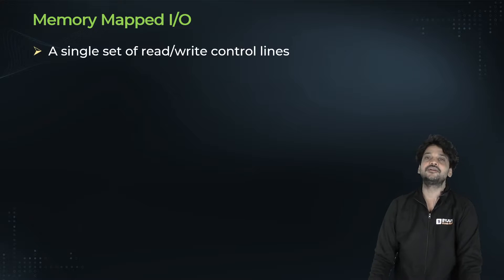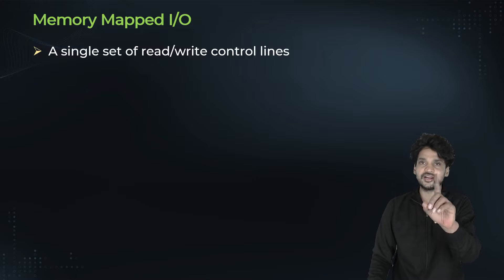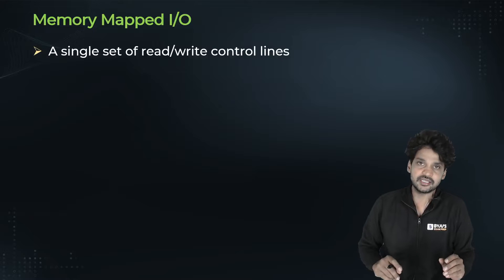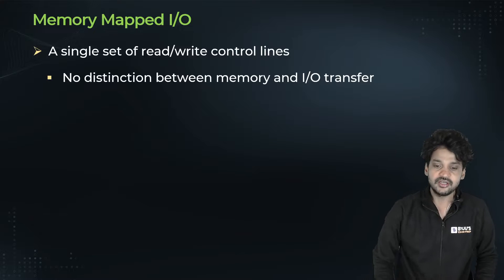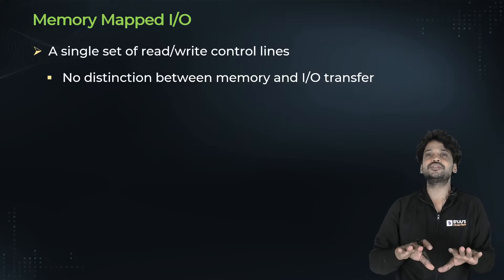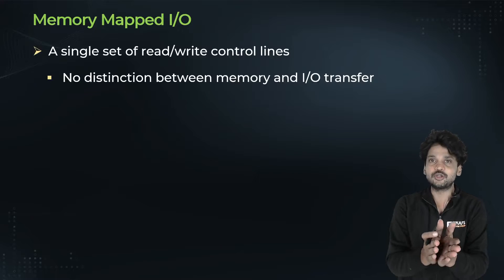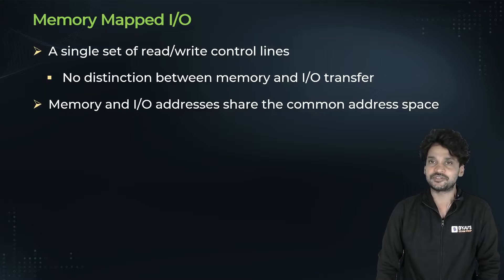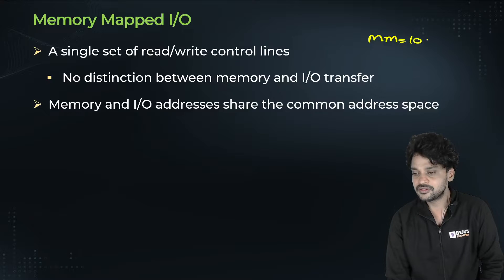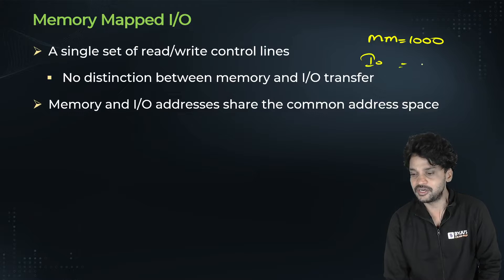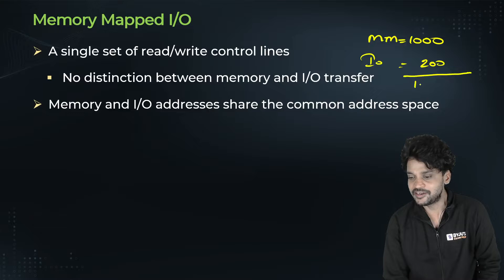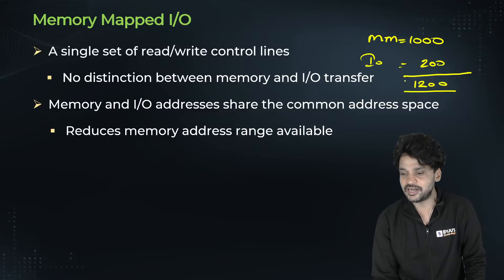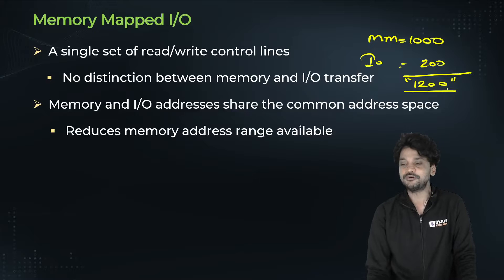Memory mapped IO uses a single set of read and write control lines. Only one control line is used to communicate with both main memory and IO devices. There is no distinction between memory and IO transfers at the control line level; the transfer is automatically differentiated by the address space. Memory and IO addresses share a common address space, and this reduces the memory address range available for actual main memory.